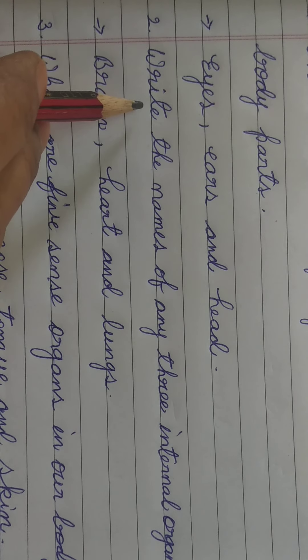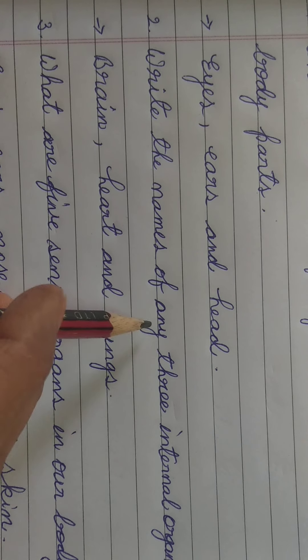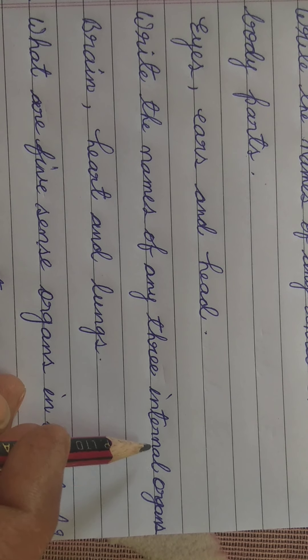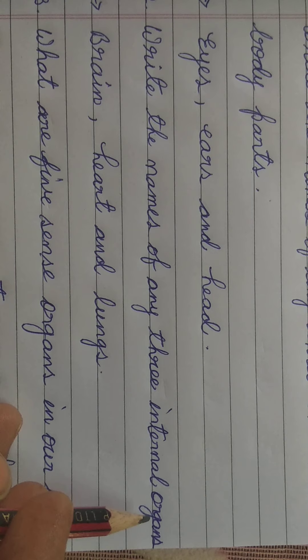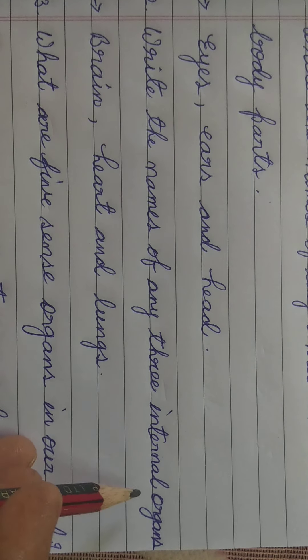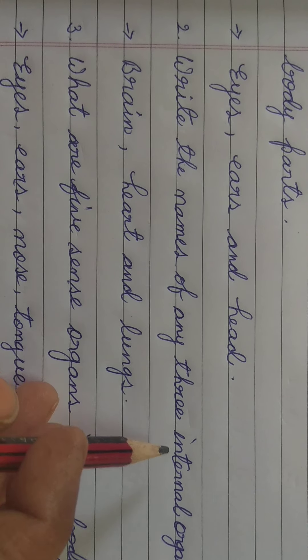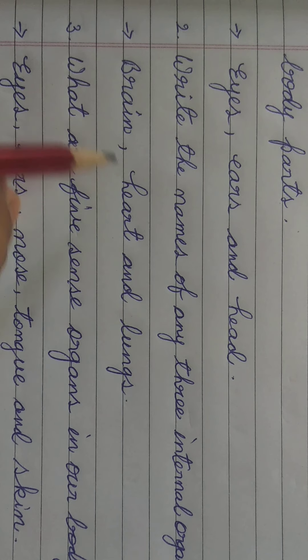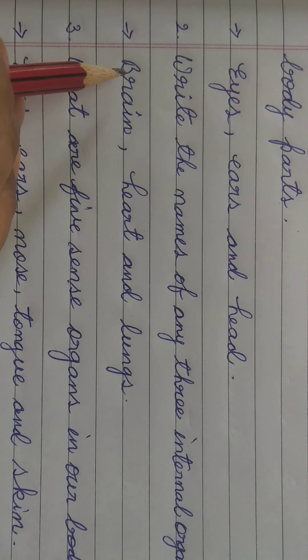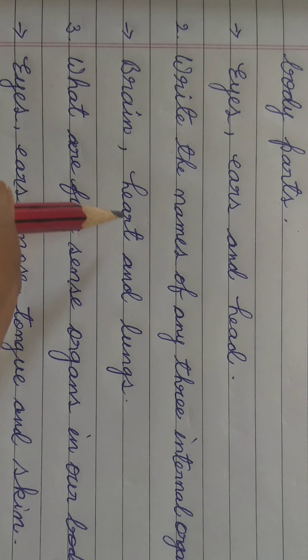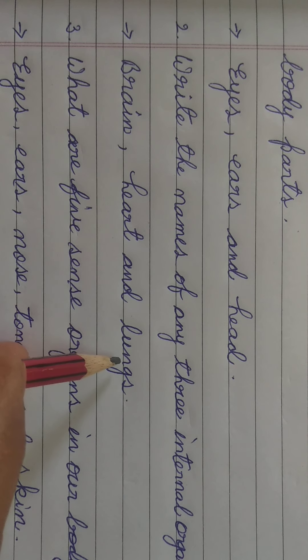Second one, write the names of three I-N-T-E-R-N-A-L internal O-R-G-A-N-S organs. What are internal organs, joh organs body ke andar rehte hain? The answer is B-R-A-I-N brain, H-E-A-R-T heart and L-U-N-G-S lungs.